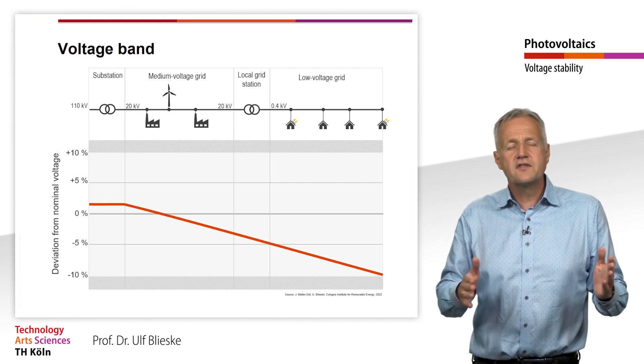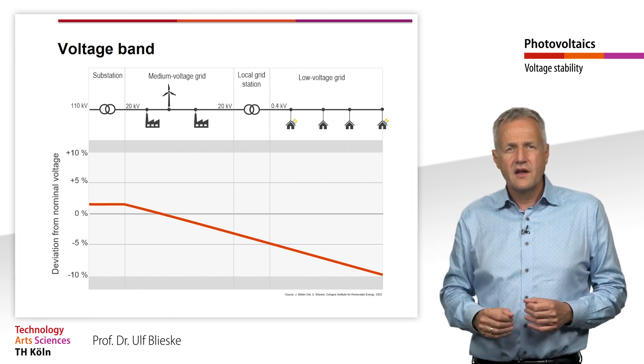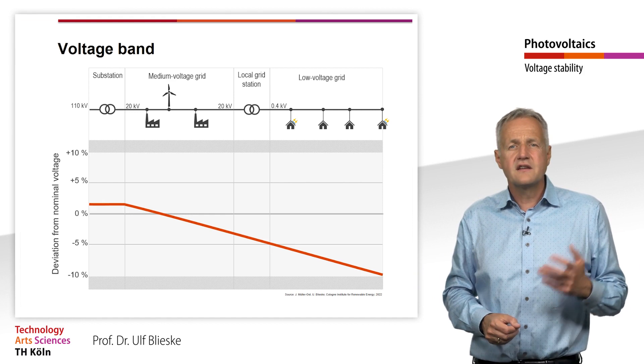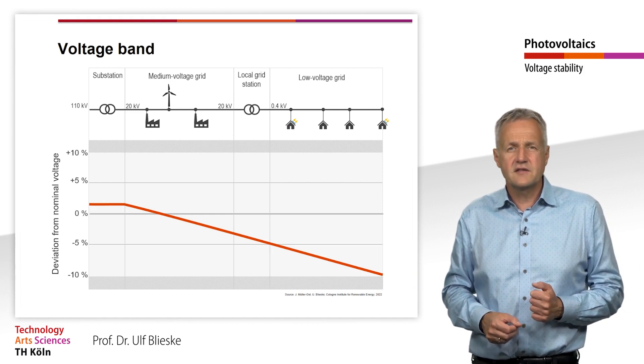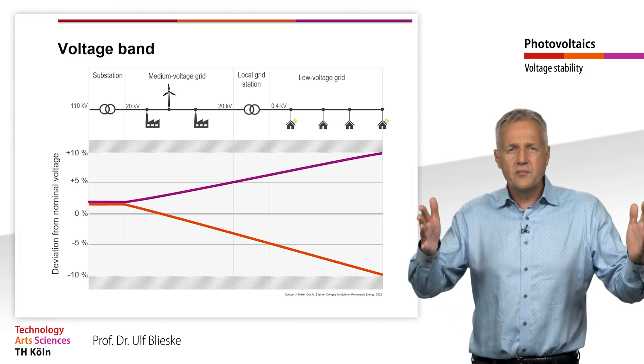This results in a voltage drop, as we have already seen in the sizing of lines for PV systems. The greater the power transported, the greater the voltage drop.